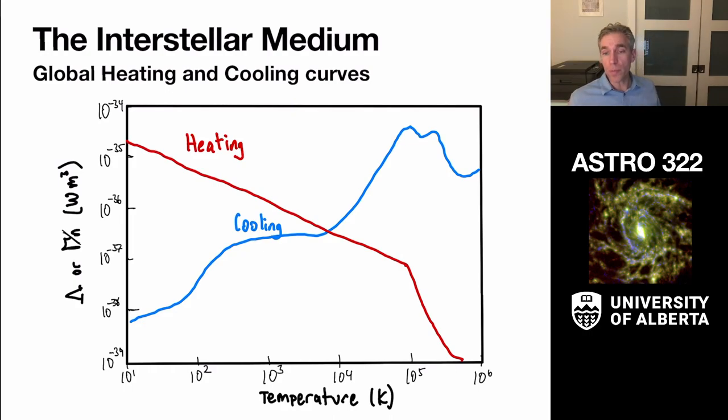Okay. In general, we will be working with heating and cooling curves for the ISM that look a little something like this. These have kind of characteristic shapes to them. We'll always give you kind of tabulated versions of them. And then if you're going to use them,